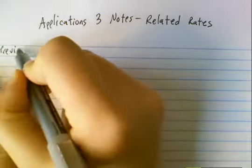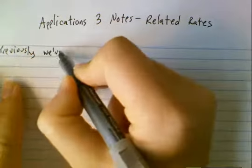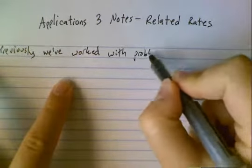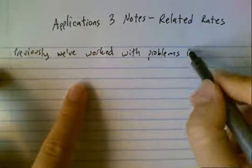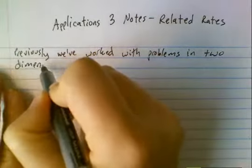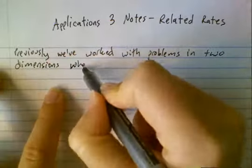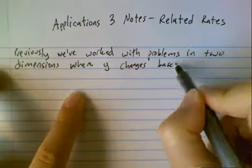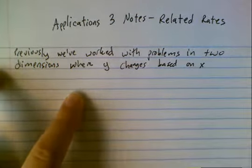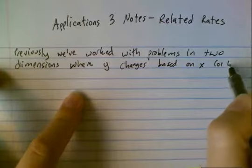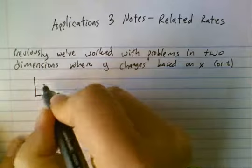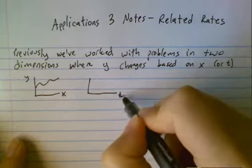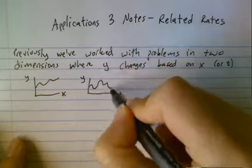So previously, we've worked with problems in two dimensions. That means that y changes based on x, or sometimes it's been t, sometimes it's been a different variable, but it's always only been one variable. For example, we've had things like this — this is x, this is y — or this is t, this is y.